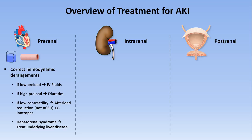If treating the underlying liver disease is not possible, there is limited evidence for possible benefit from the combination of octreotide, midodrine, and albumin, which act as a somatostatin analog, an alpha agonist, and an osmotically active volume expander, respectively.